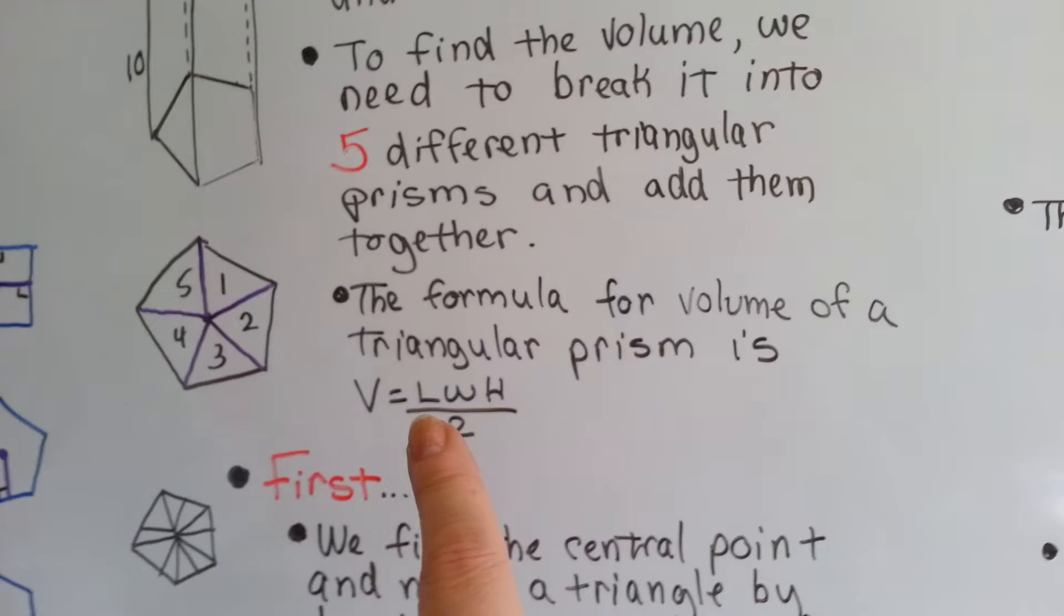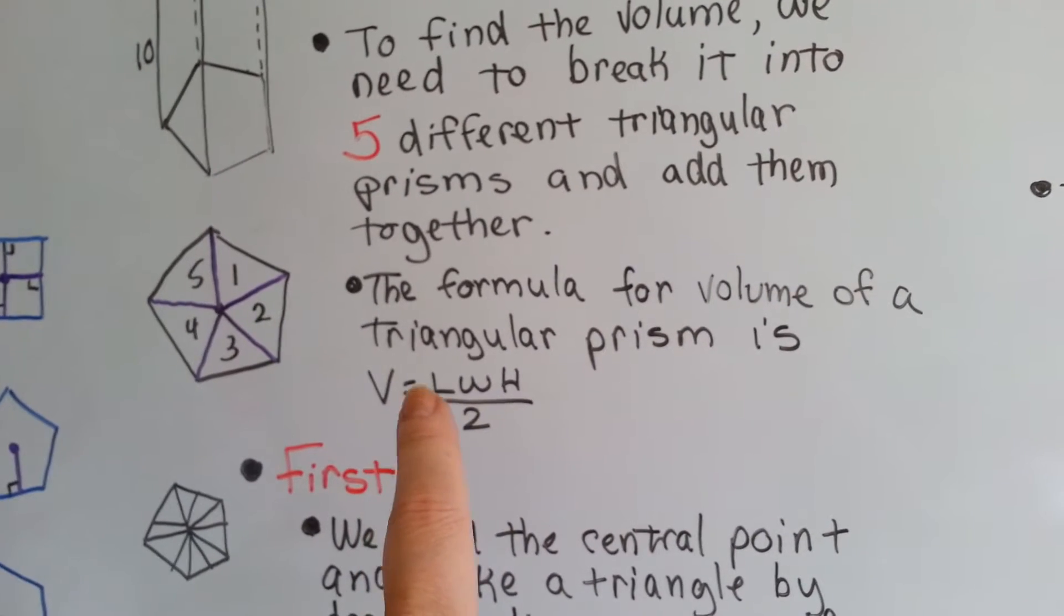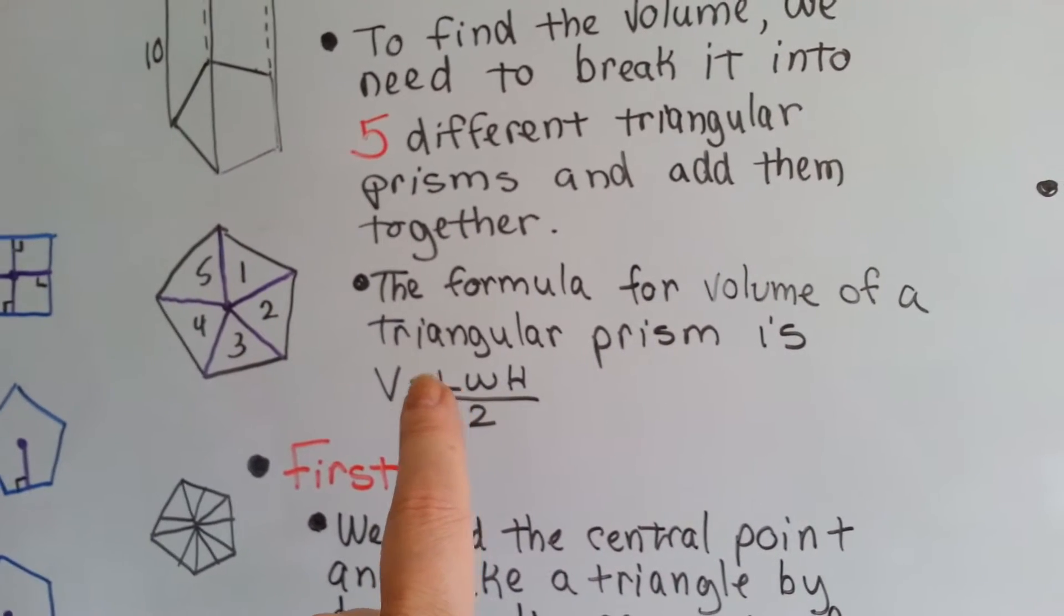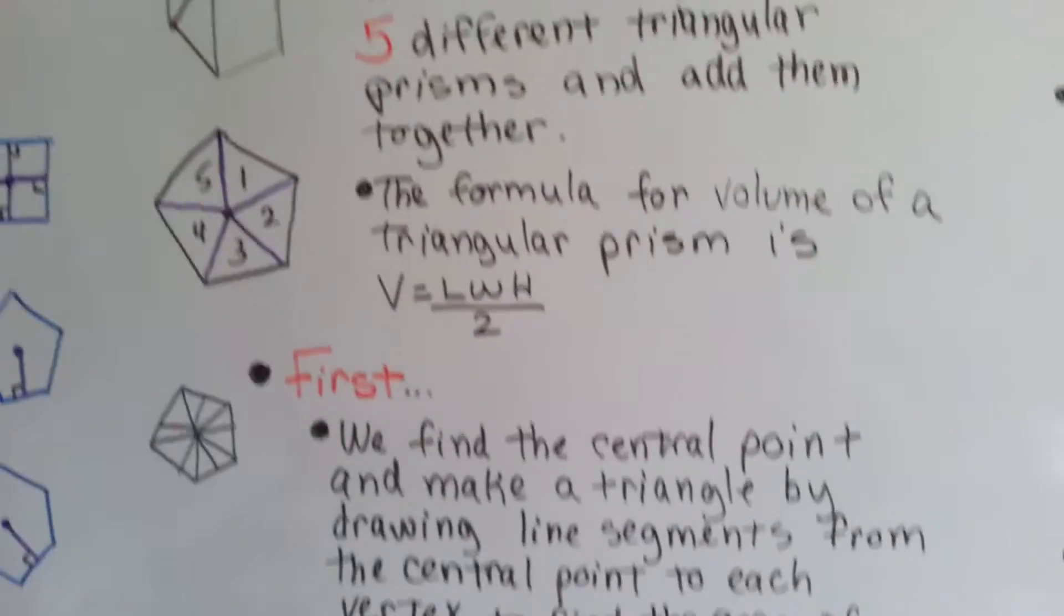The formula for the volume of a triangular prism is the volume is equal to the length times the width times the height divided by two.